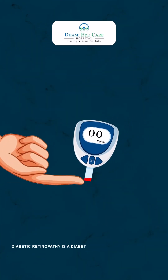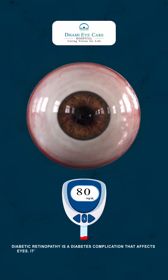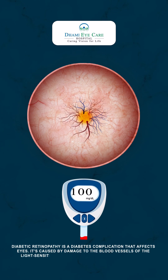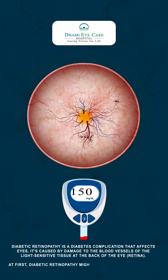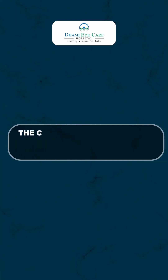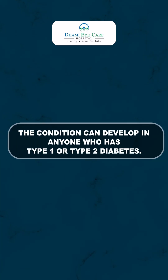Diabetic retinopathy is a diabetes complication that affects the eyes. It's caused by damage to the blood vessels of the light-sensitive tissue at the back of the eye. At first, diabetic retinopathy might cause no symptoms or only mild vision problems, but it can lead to blindness. The condition can develop in anyone who has type 1 or type 2 diabetes.